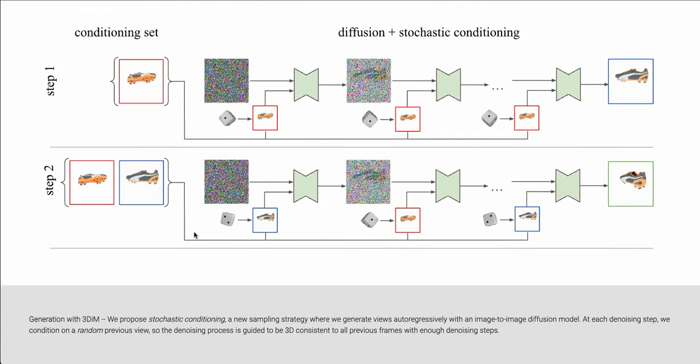And here it's summed up really nicely saying generation with three dim, we propose stochastic conditioning, a new sampling strategy where we generate views auto-regressively with an image to image diffusion model. At each denoising step, each iteration here, we condition on a random previous view. So the denoising process is guided to be 3D consistent to all previous frames with denoising steps.